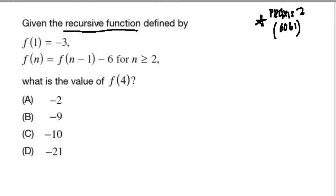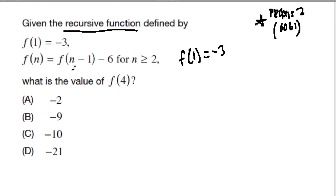A recursive function just uses information in each step. For any step n, it uses the n-1 step to figure out what's next, and that's what we have here. We know that f of 1 equals negative 3. But for f of n, anything greater than or equal to 2, we have to plug that into this formula.